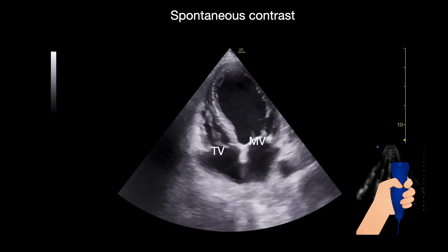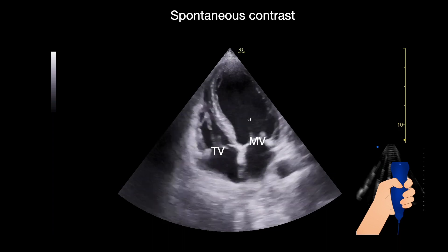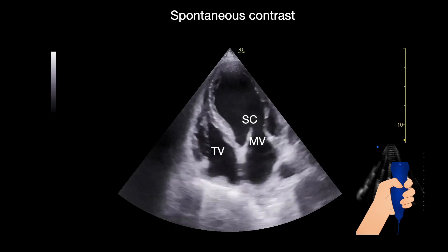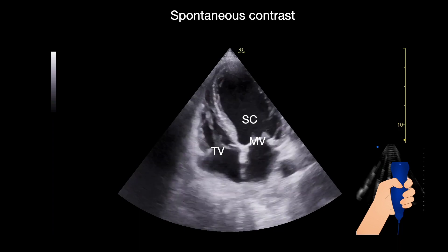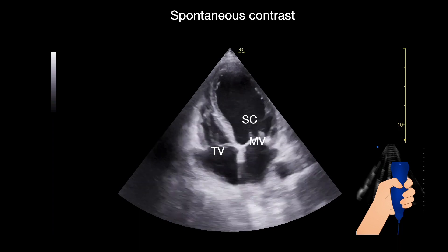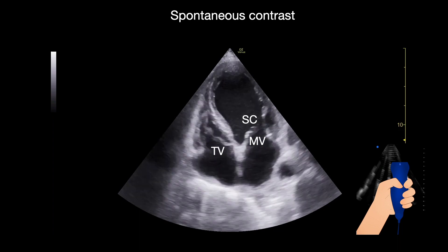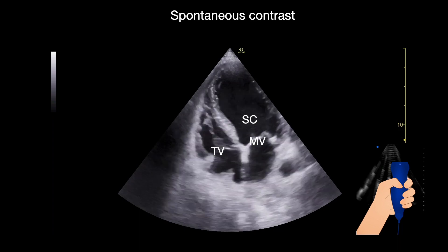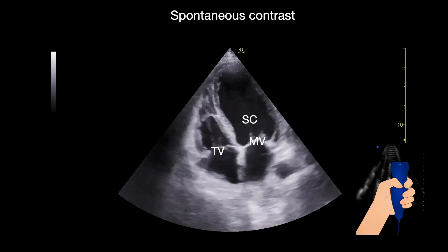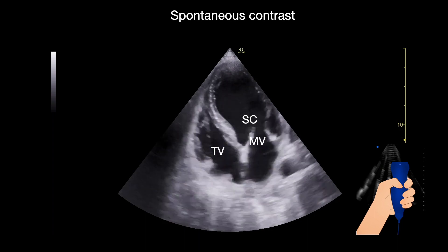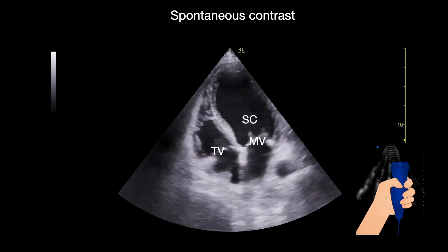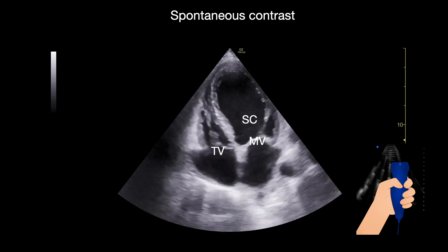Spontaneous contrast is here, and it's very important to know that its presence is associated with thrombi, especially when found in the left atrium and the left atrium appendage.